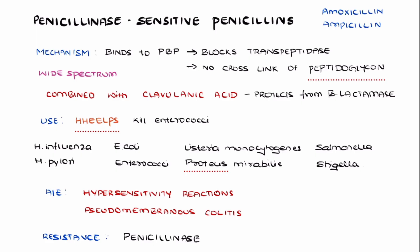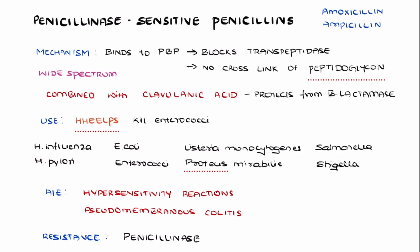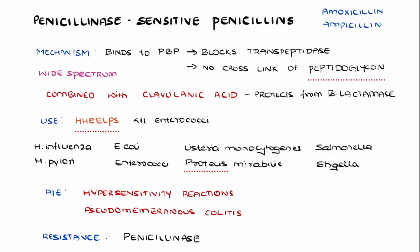The penicillinase-sensitive penicillins can be used in the treatment of H. influenzae, H. pylori, E. coli, Enterococci, Listeria monocytogenes, Proteus mirabilis, Salmonella, and Shigella infections. This can be remembered with the mnemonic ELB-skills, starting with Enterococci.